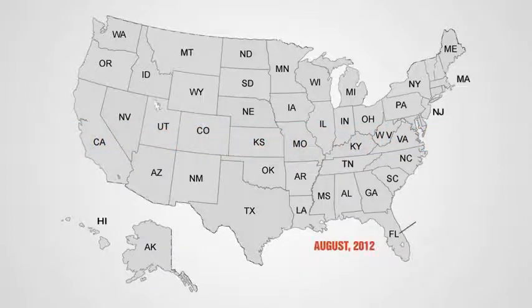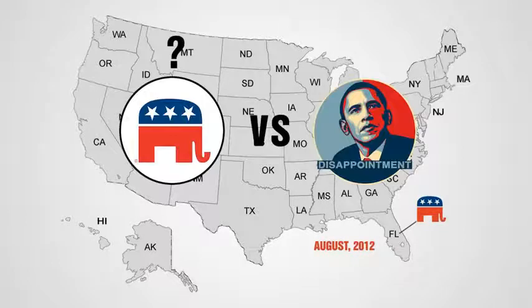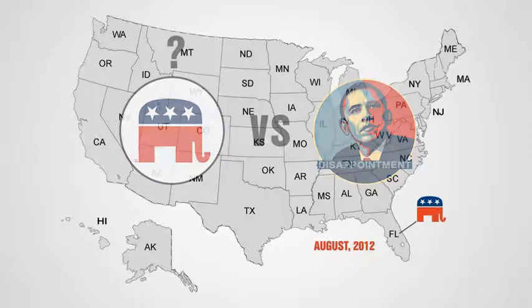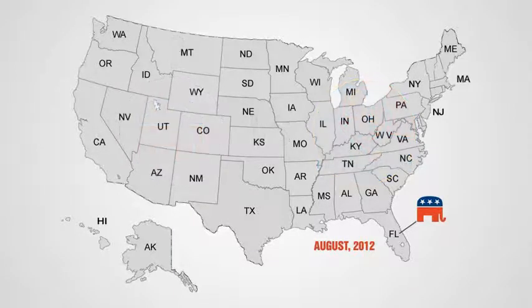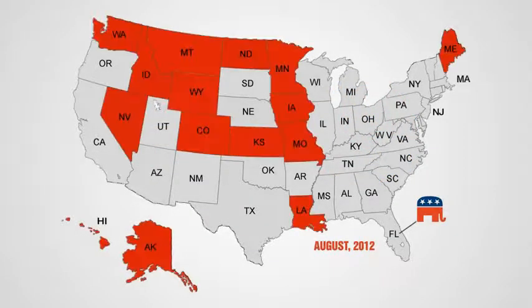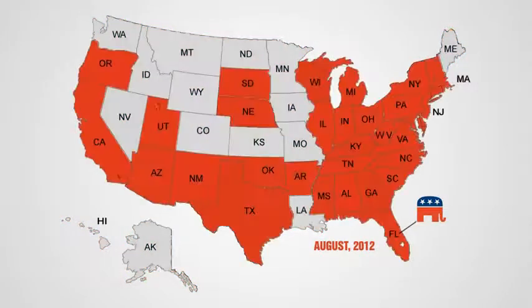In August 2012, the Republican Party will hold a national convention in Florida in which delegates will officially vote for a Republican nominee to run against Barack Obama. Each state has its own process for electing these delegates, either through a caucus system, as in these states, or a primary system, as in these states.